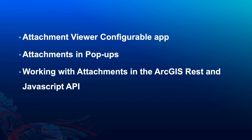In today's presentation we are going to cover utilizing attachments to showcase a location. We will cover using the attachment viewer configurable app to highlight attachments in the feature layer. Then we will move to using map viewer to configure pop-ups to display attachments. In a demo, we will look at how those pop-ups can be utilized in another configurable app to provide more context about a location. We will also take a look at using the ArcGIS REST API and JavaScript API to query for attachments in a feature service.